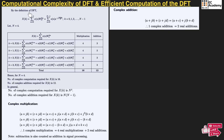First, let us define the discrete Fourier transform. We can define discrete Fourier transform as x of k is equal to summation of n is equal to 0 to N minus 1, x of n times omega N to the power of kn. This can also be written as summation of n equals 0 to N minus 1, x of n times e to the power of minus j 2 pi k n by N, where k ranges from 0 to N minus 1.